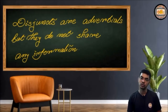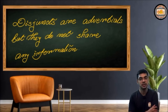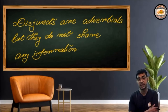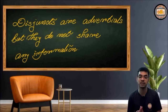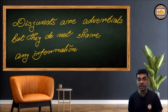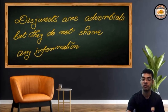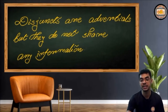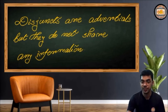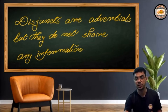Do you really want to understand what disjuncts are? Disjuncts are adverbials — there's no confusion in that. But which sorts of adverbials? They are adverbials, but they do not share any information. For adjuncts, we discussed that they share some information, and this information isn't essential for every sentence, so we may get rid of them in our sentence production. But when we talk of disjuncts, we must remember that these are not things we may easily throw out of our sentences.